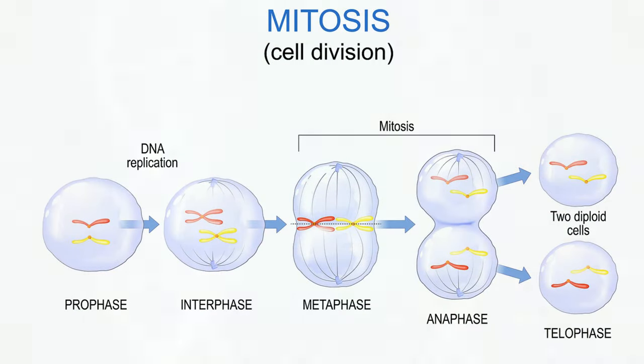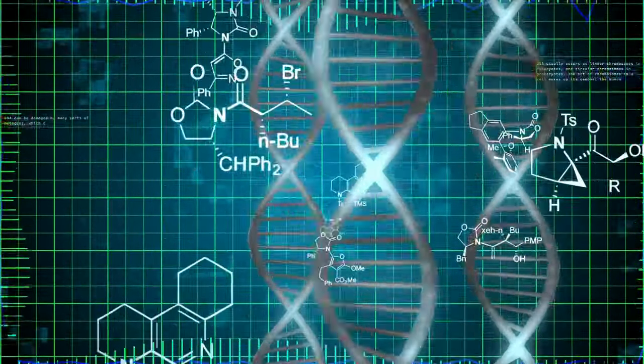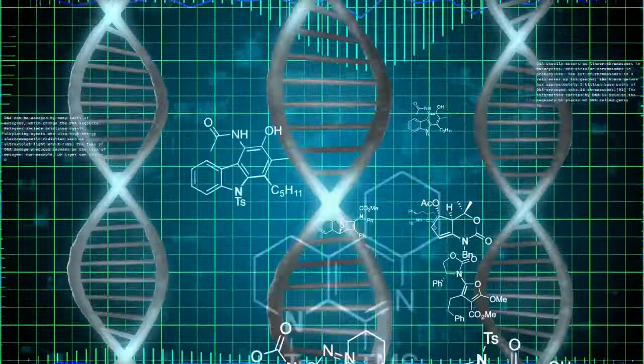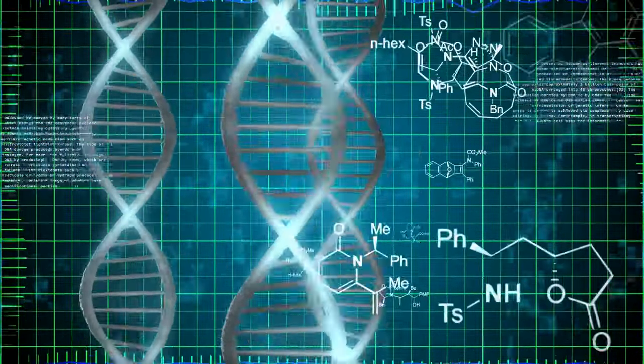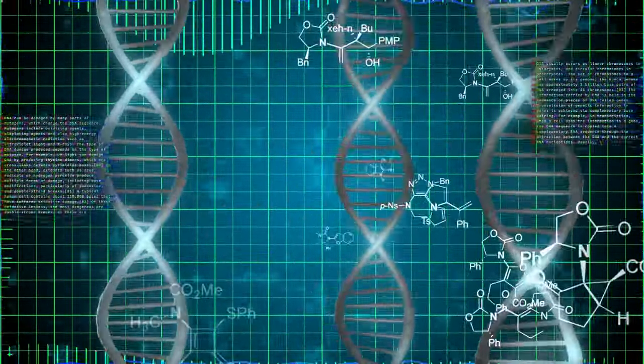4. Genetic information is passed on during cell division. When a cell divides, a copy of the DNA is passed on to the new daughter's cell. And it's an exact copy.